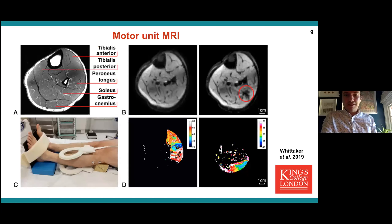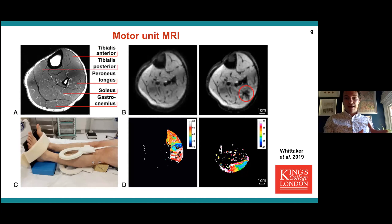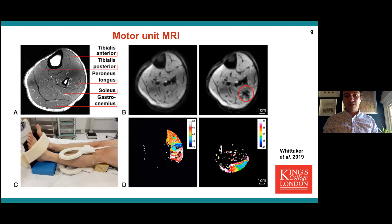Bringing it right to the modern day, the group in Newcastle have been doing some pioneering work with motor unit MRI. They've got an MRI setup that can capture individual fasciculation potentials on MRI, which is really quite remarkable, and this gives new insight into the anatomy of the motor unit.